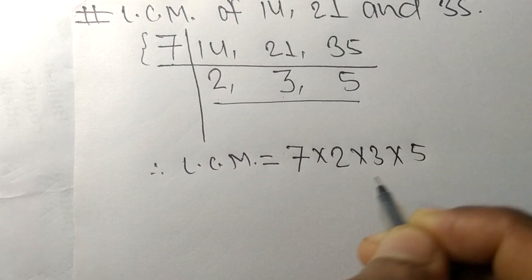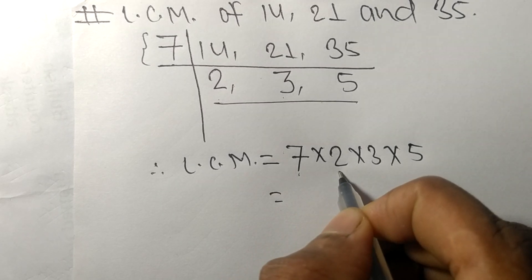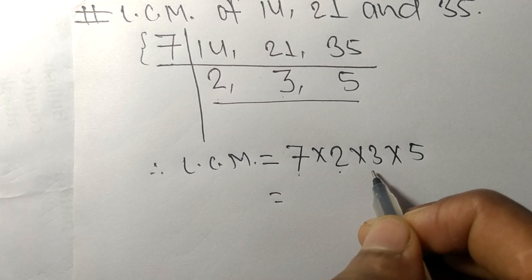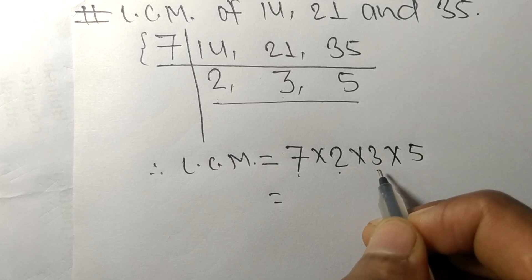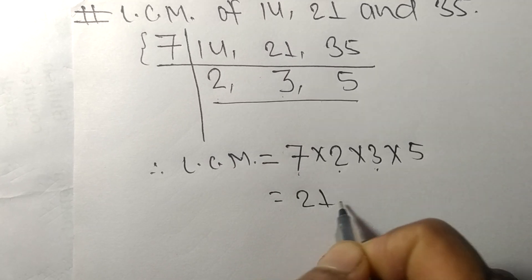7 times 2 is 14, 14 times 3 is 42, 42 times 5 is 210.